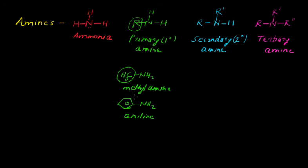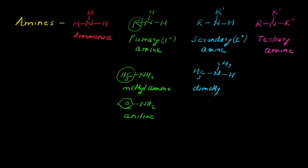Similarly, one can take examples for secondary amines. We can put two groups on nitrogen: CH3 and CH3 with one H, giving us dimethylamine. Here two hydrogen atoms are replaced by two methyl groups, which is why it is dimethylamine — a secondary and aliphatic amine.